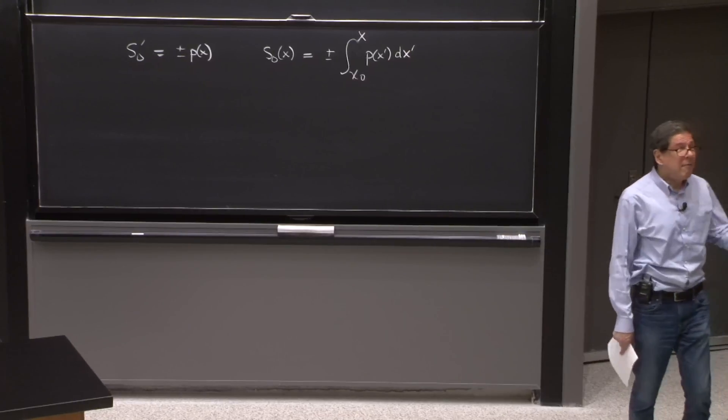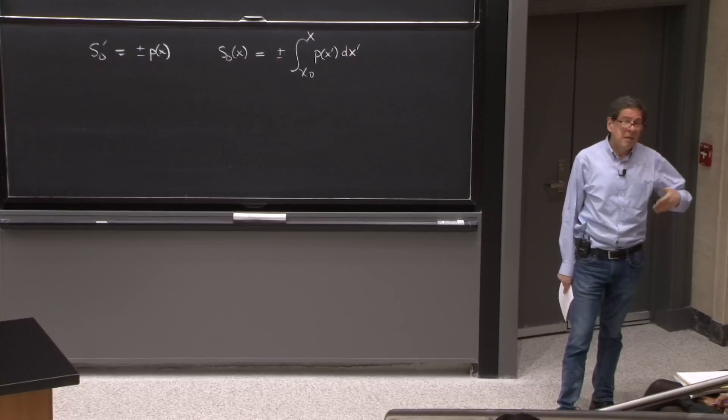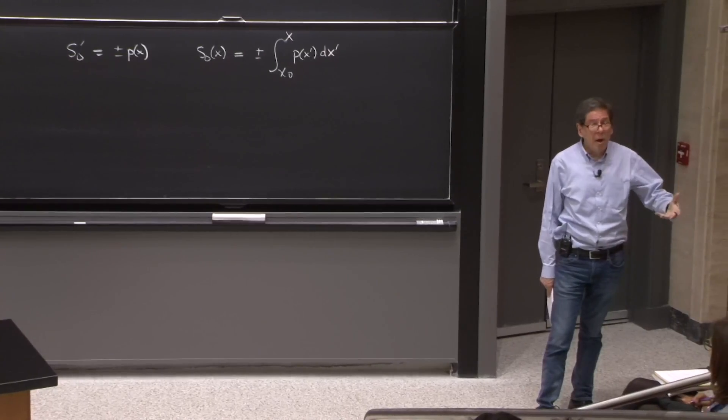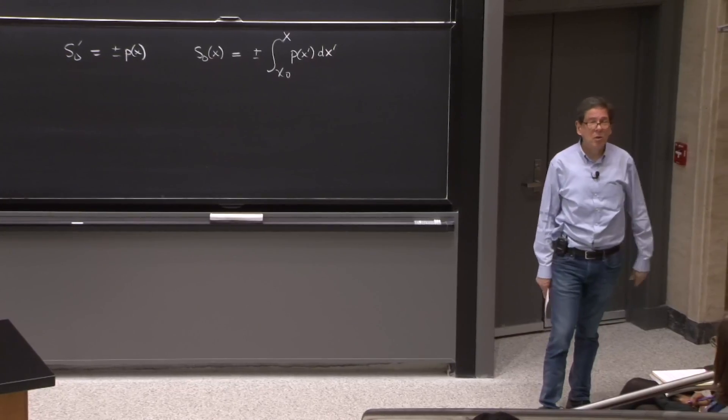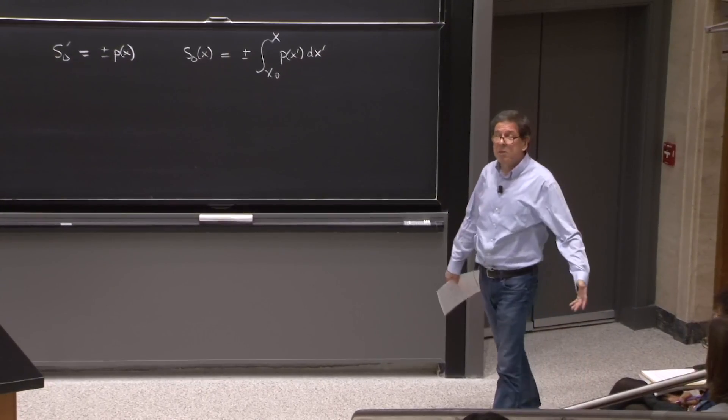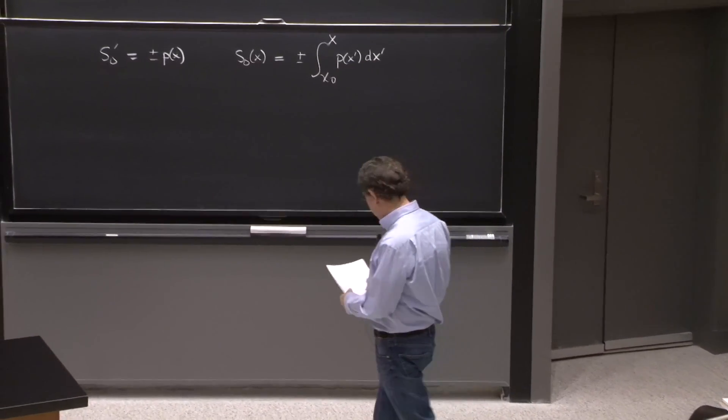So this is our solution. Even the plus minus should not disturb us. If you have the p squared, you don't know if the particle is moving to the left or to the right. So that ambiguity is perfectly reasonable. A particle can be moving to the left or to the right.